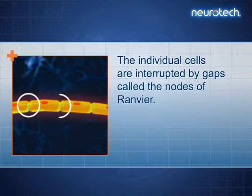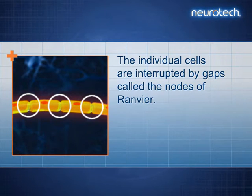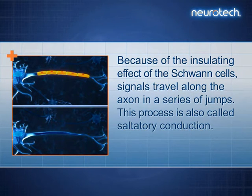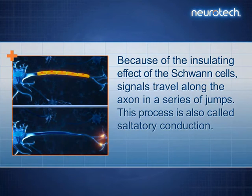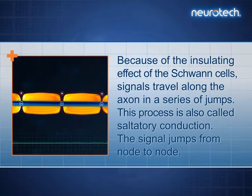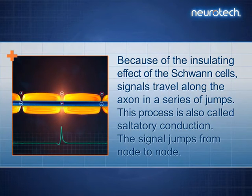The individual cells are interrupted by gaps called the nodes of Ranvier. Because of the insulating effect of the Schwann cells, signals travel along the axon in a series of jumps. This process is also called saltatory conduction. The signal jumps from node to node.